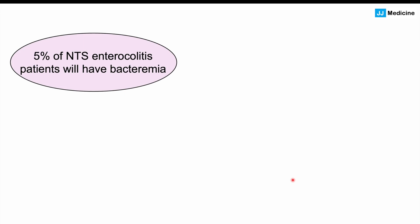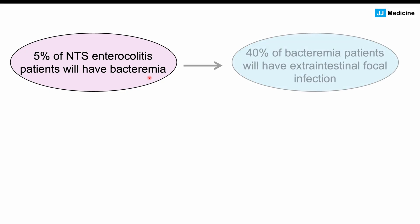A certain percentage of non-typhoidal Salmonella enterocolitis patients will develop bacteremia, where the bacteria enters the blood. Most of the time it stays in the GI system, but about 5% of patients will have bacteria in the blood. It crosses the intestinal layers into the blood and can lead to other issues. About 40% of patients who get bacteremia will have extraintestinal focal infections. These bacteria tend to seed into areas with previous structural abnormalities.